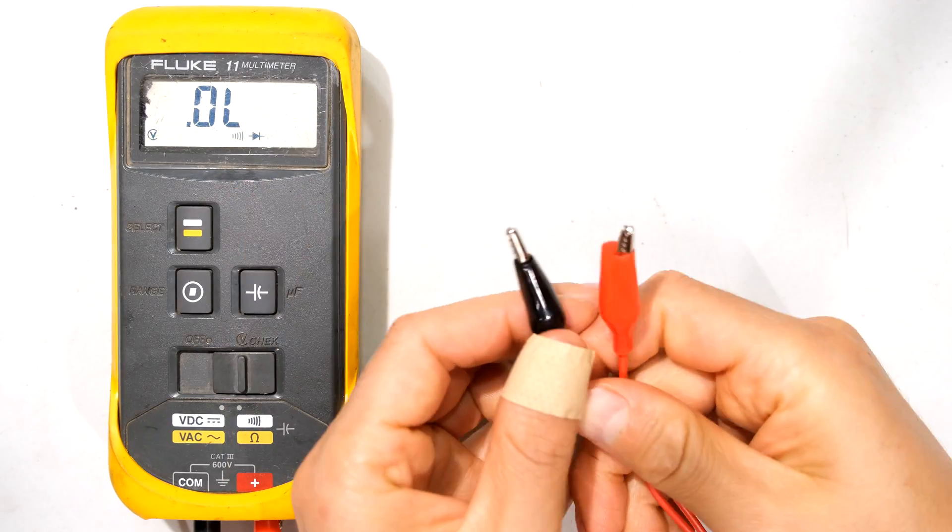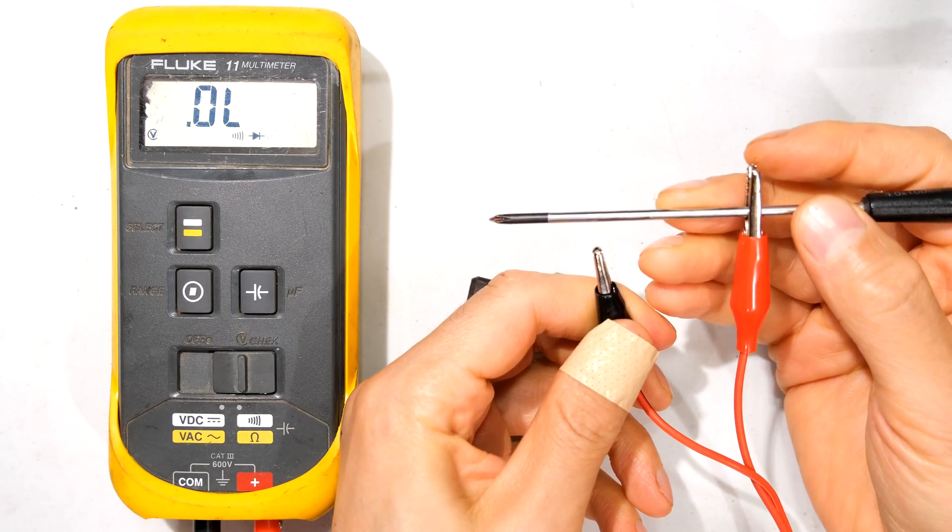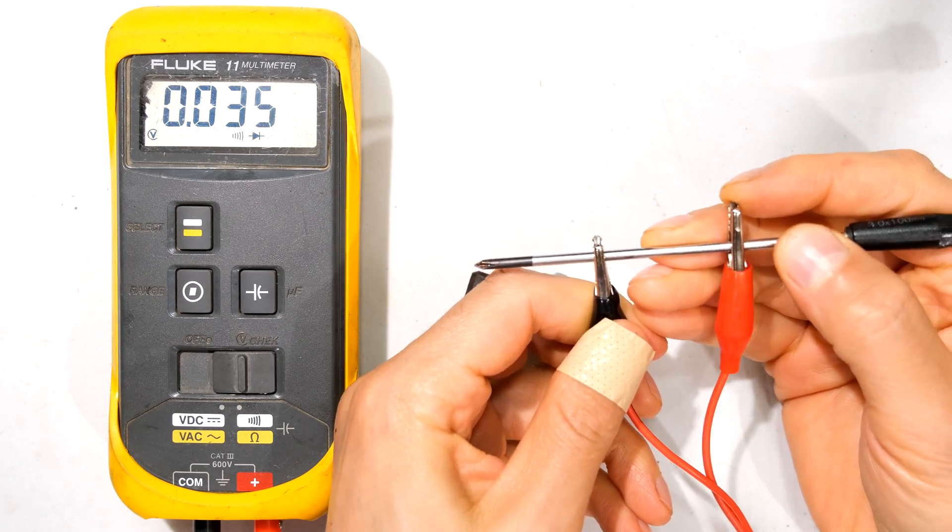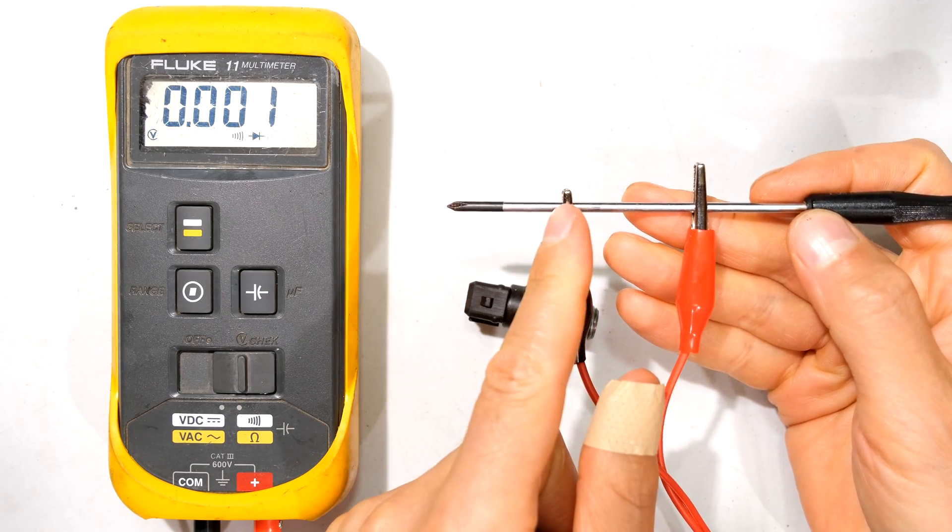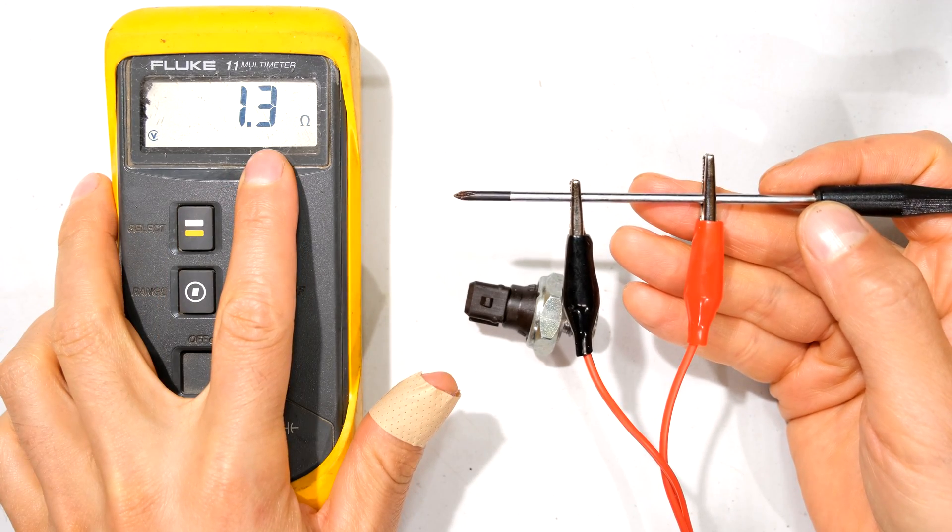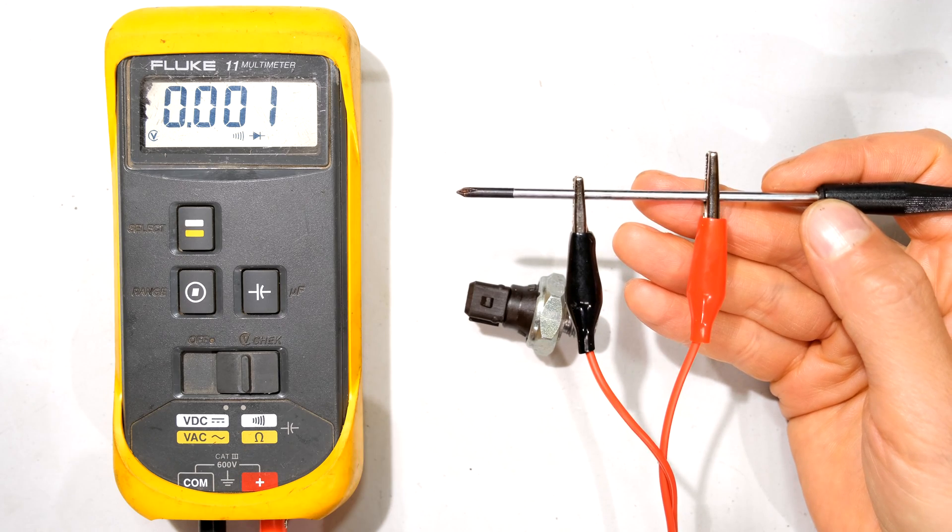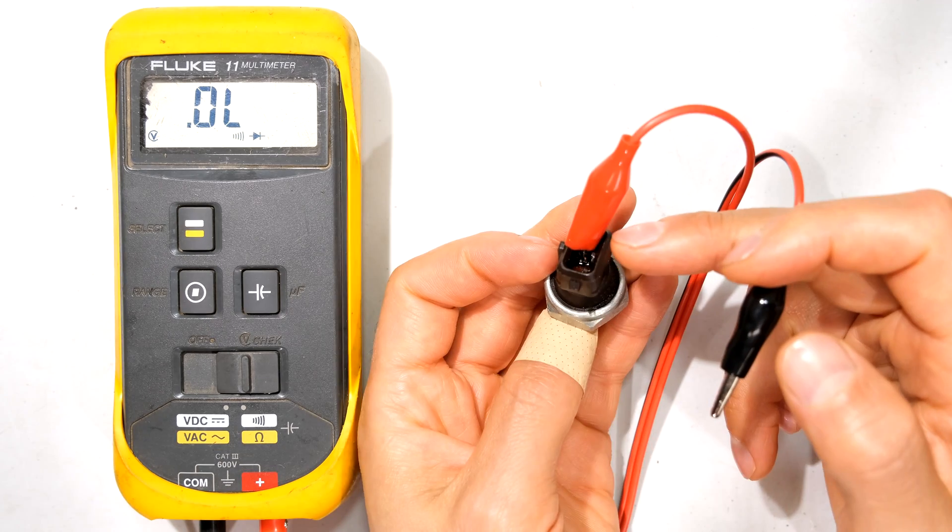Right I have a multimeter and here are the leads. If I have a short circuit, for example I'm measuring across the screwdriver. This is a dead short. As you can see it says zero here, or very low ohms. You can see there are 1.3 ohms. But you can also hear the buzzer telling me that it is a dead short.